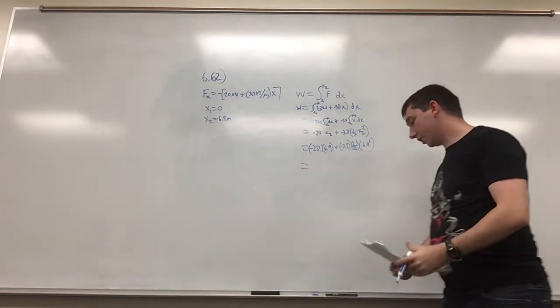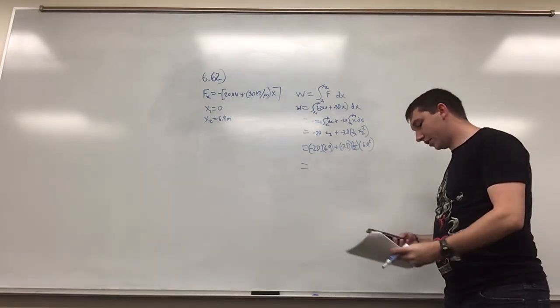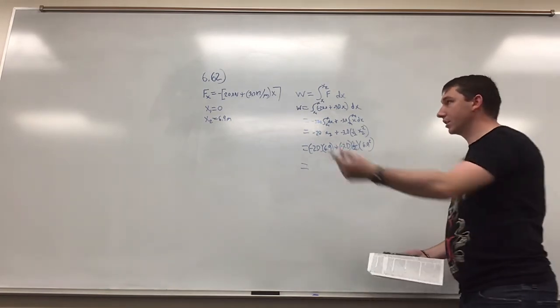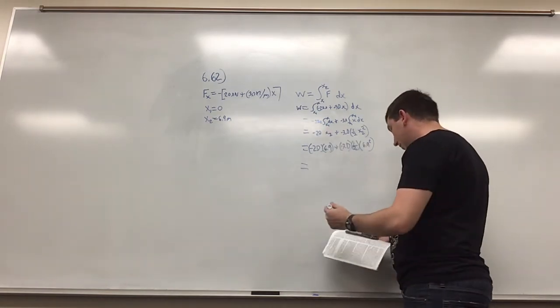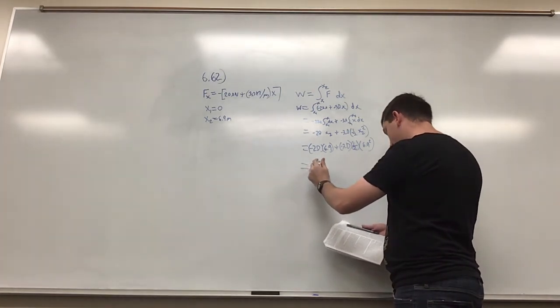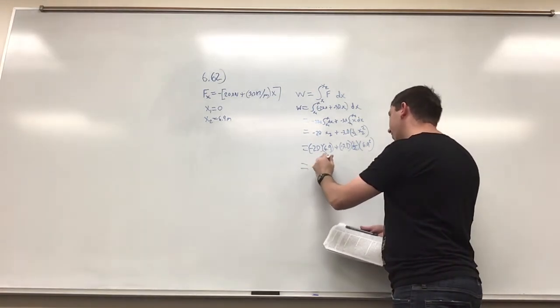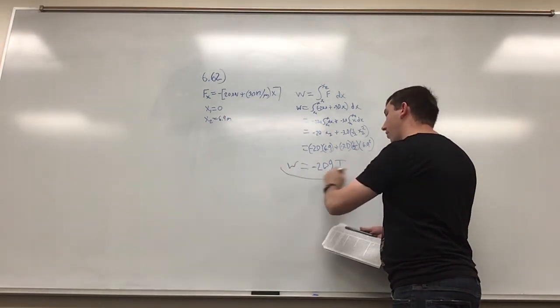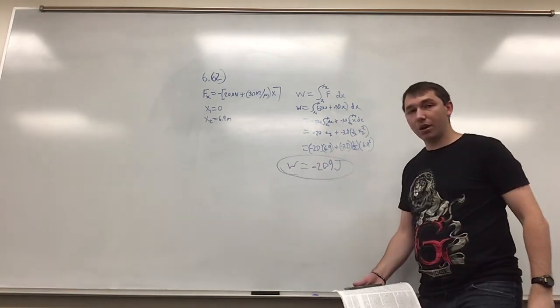And then when you do the work, you find that the total work done on the cow over this distance is negative 209 joules. And that's the problem.